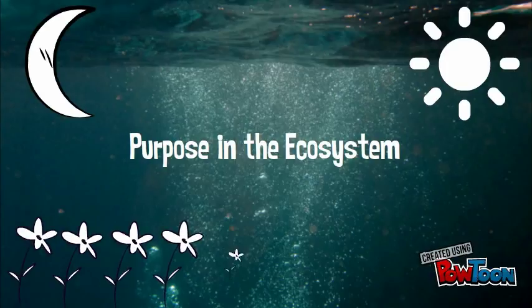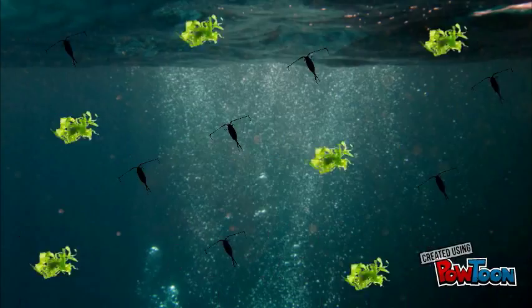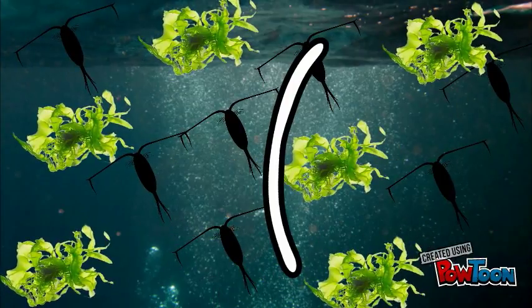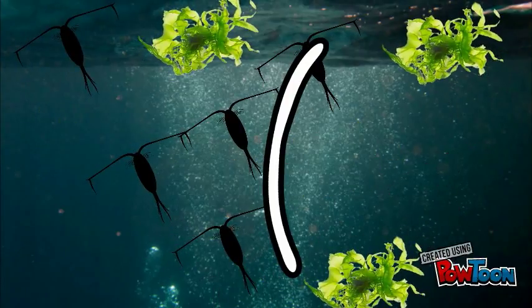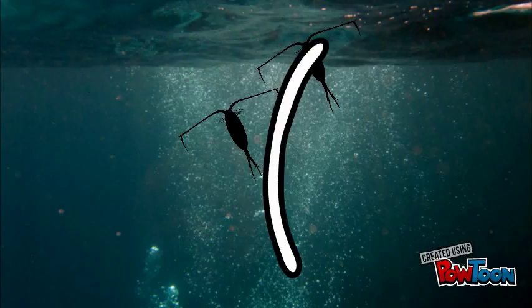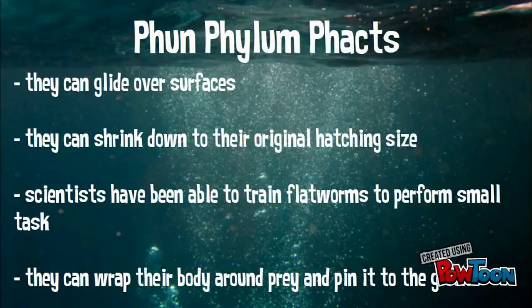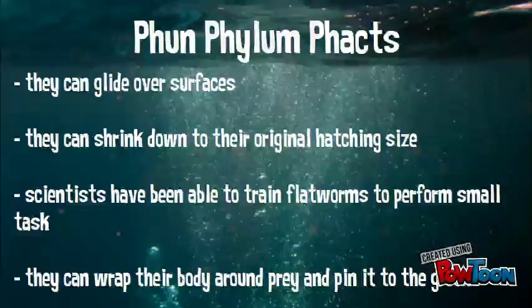Purpose in the ecosystem: Flatworms help to maintain a healthy population of algae and plankton. Flatworms can glide over surfaces, they can shrink down to their original hatching size, they can wrap their body around prey and pin it to the ground, and scientists have been able to train flatworms to perform small tasks.